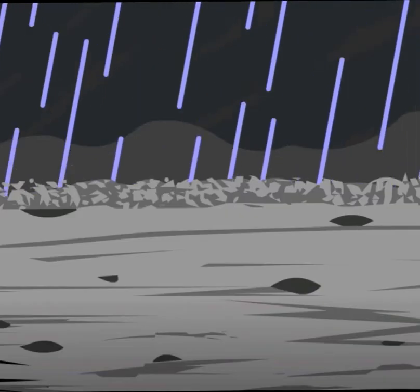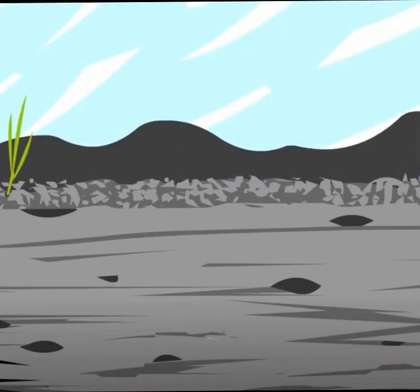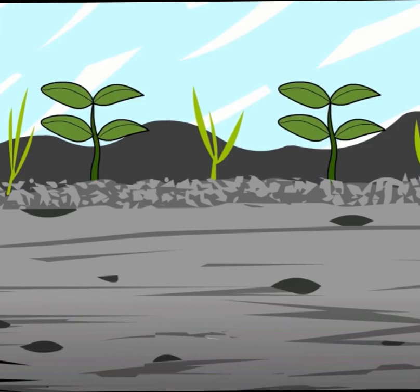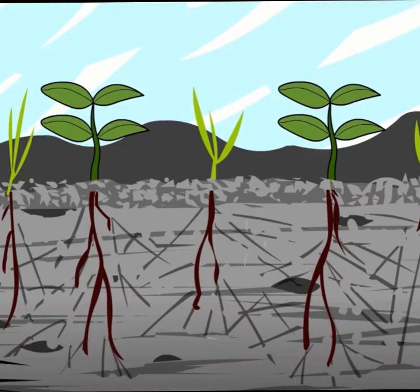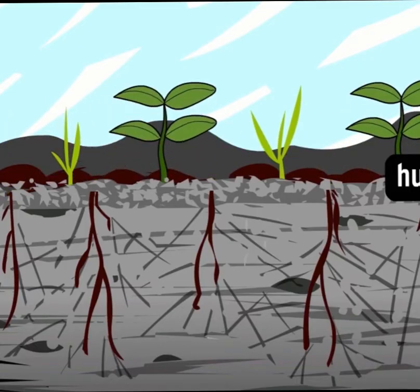As the rock erodes and weathers over many years, it breaks down into tiny pieces and small plants are able to grow in it. The roots of the plants break the rock down even more. Humus made of dead plants accumulates in the rock.